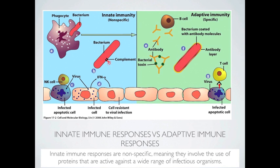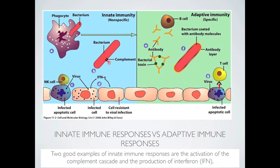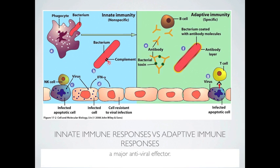Innate immune responses are nonspecific, meaning they involve the use of proteins that are active against a wide range of infectious organisms. Two good examples of innate immune responses are the activation of the complement cascade and the production of interferon. Interferon is a major antiviral effector.